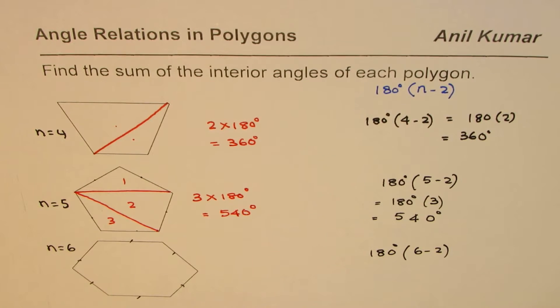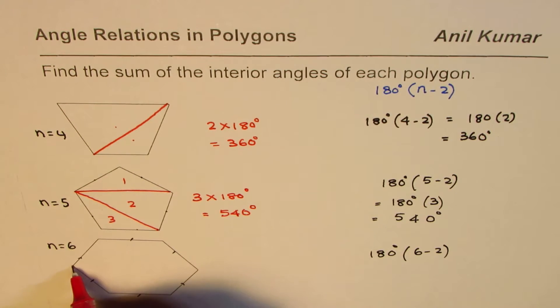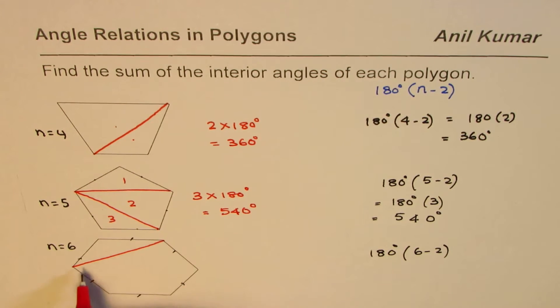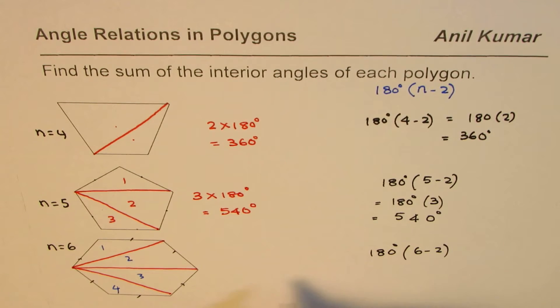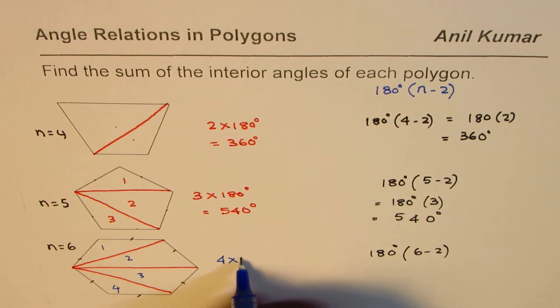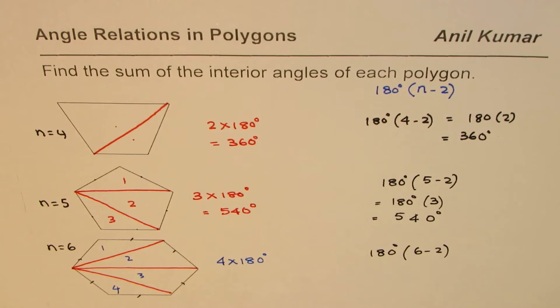Using the triangle concept, take a vertex and join it to the others. Count the number of triangles: 1, 2, 3, and 4. Note that 6 minus 2 is also 4. So 4 times 180 degrees is your answer. That is how you can do it.